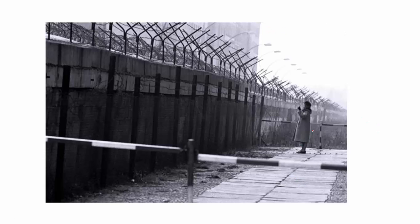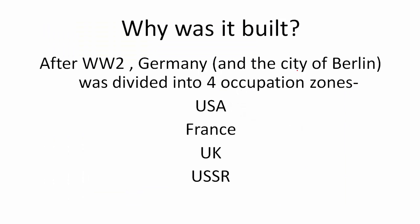This is how the second generation wall looked when it was first built. You can see there is a basic cemented wall which has fortifications on the top. It is almost 11 to 12 feet high and no one is allowed to cross it.